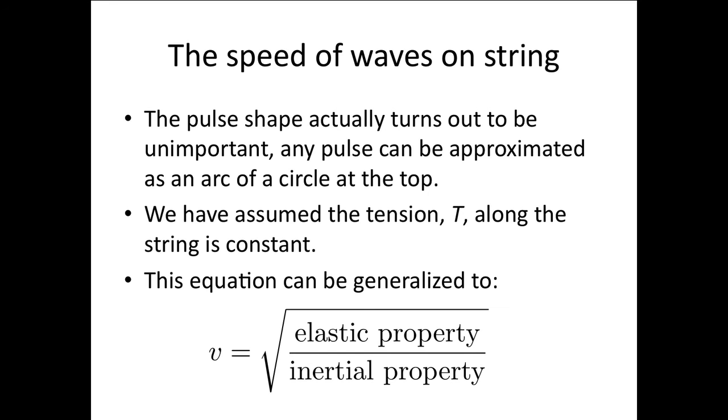We'll see later that this equation can actually be generalized. We'll be seeing it for sound waves. But we can actually generalize it to the velocity is equal to some elastic property, in this case the tension, over some inertial property, in this case the mass per unit length. For a sound wave, it ends up being the bulk modulus, given the symbol B, over the density per unit volume of the material that the wave is traveling through.